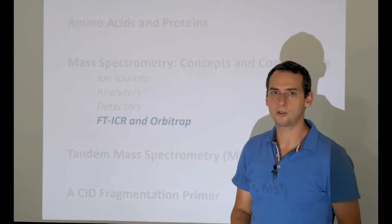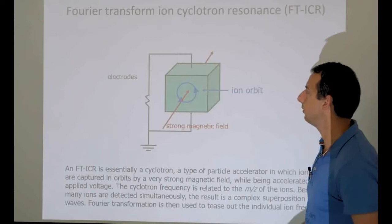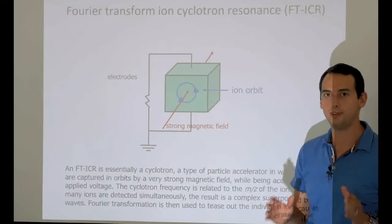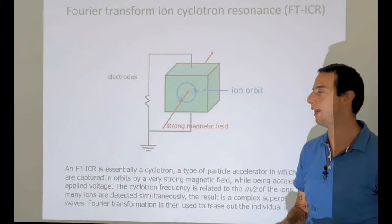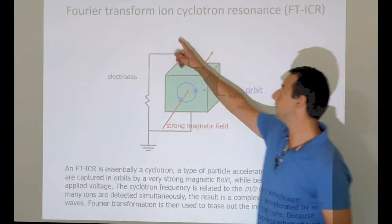We'll start with the oldest one of the two, the Fourier transform ion cyclotron resonance instrument. It's a very long name, but the name is extremely apt, just like MALDI matrix assisted laser desorption ionization. First we'll focus on the fact that it's an ion cyclotron.